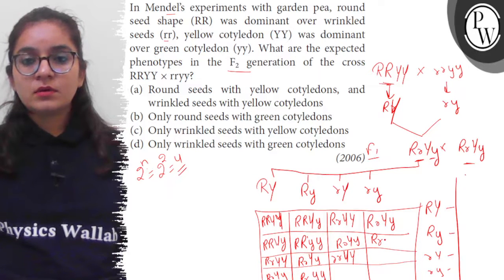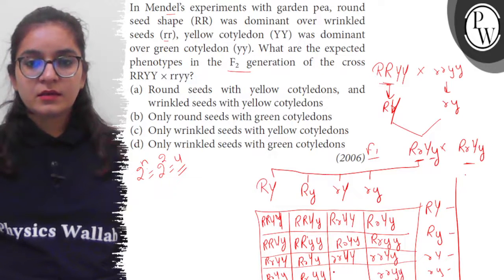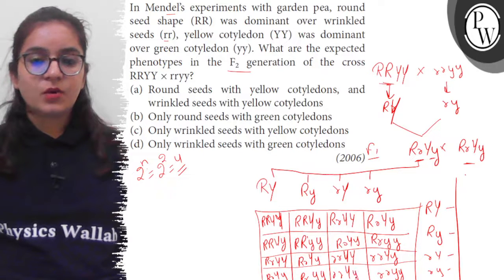Wrinkled, heterozygous yellow. Wrinkled green, and here wrinkled yellow heterozygous yellow.